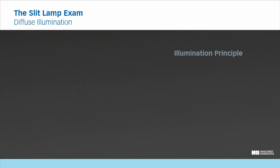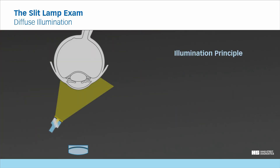Illumination principle. Diffuse illumination is a technique which illuminates the observed field homogeneously. It can be created either by engaging the diffuser or with a dedicated background illumination.